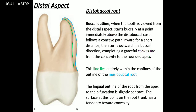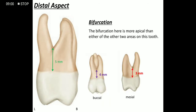The entire buccal outline of the distobuccal root is inside the buccal outline of the mesobuccal root. The lingual outline of the distobuccal root shows a slight concavity from the apex to the bifurcation, then shows a convexity as it reaches the root trunk. The bifurcation distance is maximum on the distal aspect at 5 mm, minimum on the mesial aspect at 3 mm, and intermediate on the buccal aspect at 4 mm.